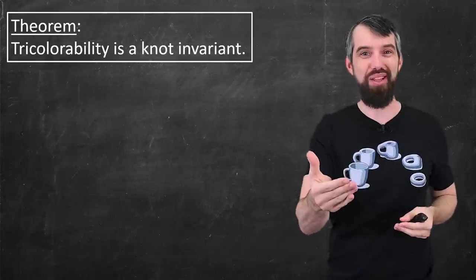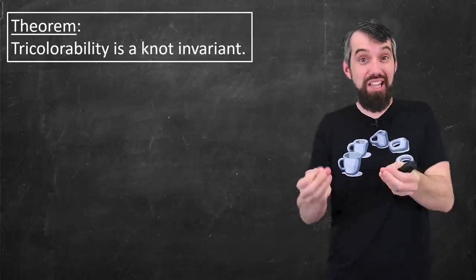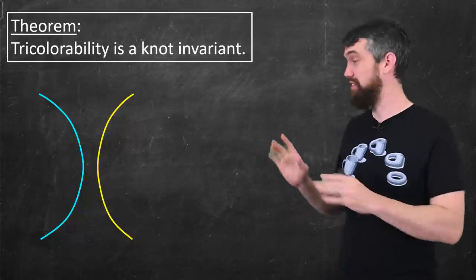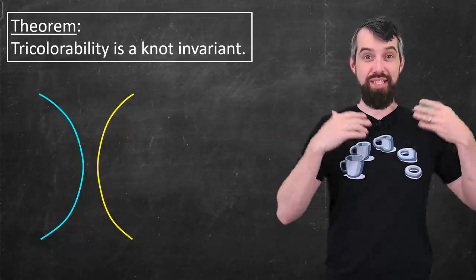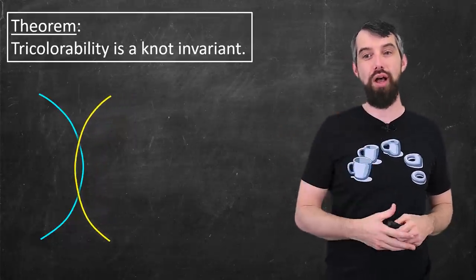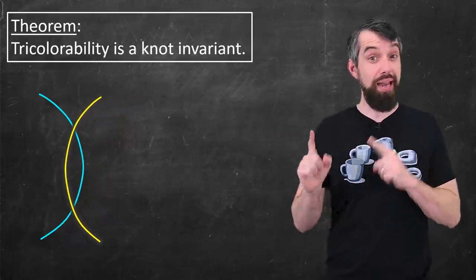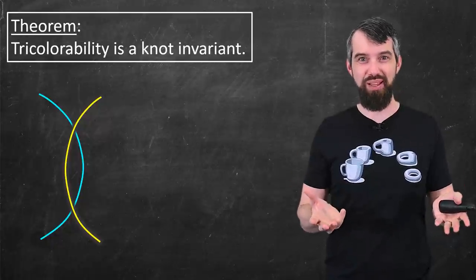How do I show something is a knot invariant? Well, I can use my Reidemeister moves. Let's take the second, for example. I have these two different strands, and the second Reidemeister move is that I can cross them over like this. This looks right now like it's violating tricolorability. Each crossing is supposed to have three colors, not two, right?